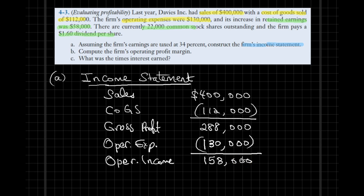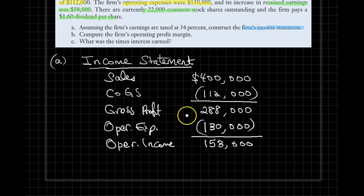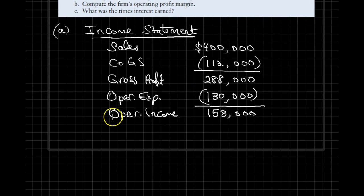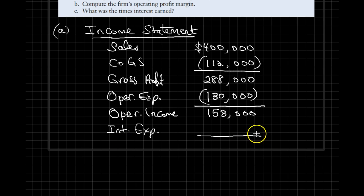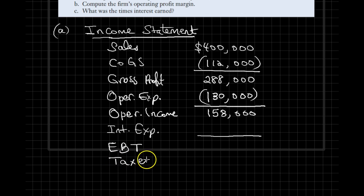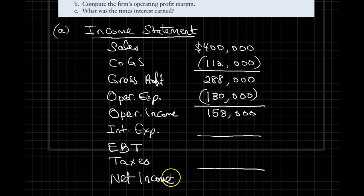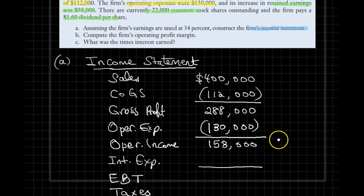We're pretty much done with the first part of the problem, but we hit a barrier because we do not know how to calculate our interest expense. What we're missing is interest expense. Once we have that number, we can subtract it from operating income to get earnings before taxes. We would then further deduct taxes to arrive at net income.